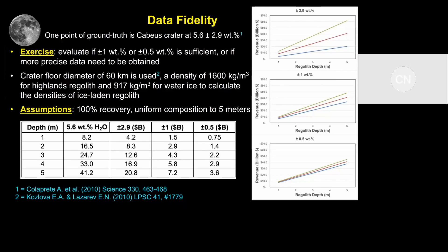It's an exercise. We need to evaluate using what we know from Cabeas Crater — 5.6 plus or minus 2.9 weight percent. Is plus or minus 1% okay, or is plus or minus half percent okay, or does it need to be better than that? We've assumed a crater floor diameter, assumed a depth, and calculated densities based upon Highlands Regolith and water ice, with assumptions of 100% recovery and uniform composition to five meters.